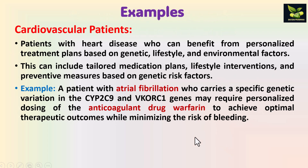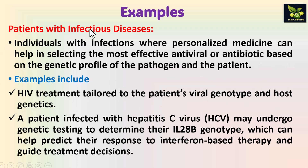Additional examples include cardiovascular patients. Patients with heart diseases benefit from tailored medication plans. For example, a patient with atrial fibrillation who carries a specific genetic variation in CYP2C9 and VKORC1 genes may require personalized dosing of the anticoagulant drug warfarin to achieve optimal therapeutic outcomes while minimizing the risk of bleeding.